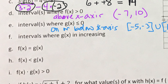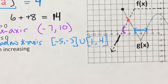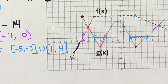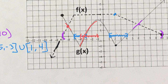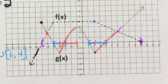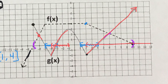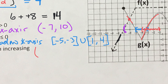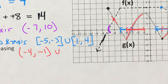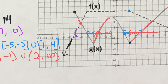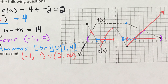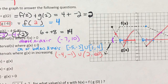For intervals where g(x) is increasing, the graph is going up and y-values are getting larger. G is increasing from negative 4 to negative 1 — with parentheses since endpoints aren't included in strictly increasing intervals — and then from 2 to infinity, because the arrow continues upward forever. Always use x-values when describing increasing intervals.